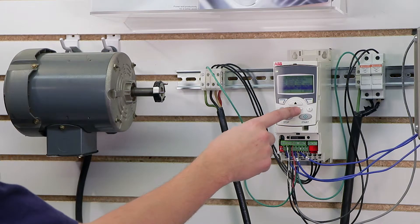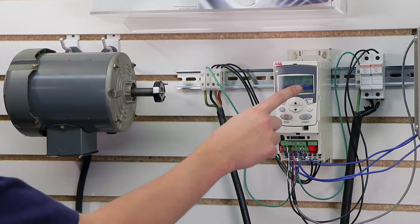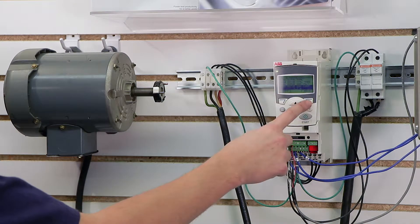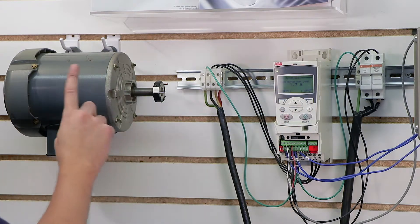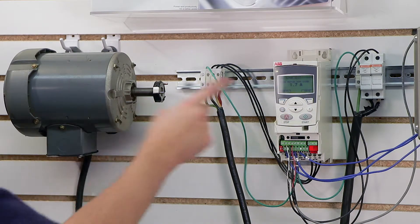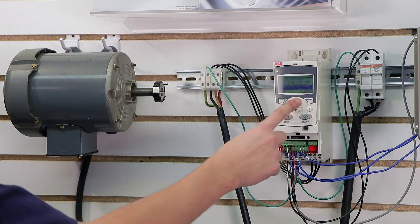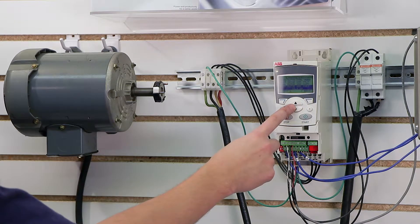Which also tells me for 99.06 - that's my current - right now my nameplate current on my motor is 1.7 amps at 240 volts, so I put it at 1.7.